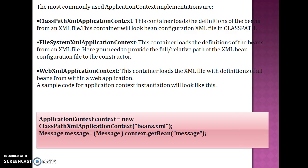ApplicationContext is an interface, so you cannot create an object for it directly. There are three implementer classes of the ApplicationContext interface. The first is ClassPathXmlApplicationContext, which loads the definition of beans from an XML file.